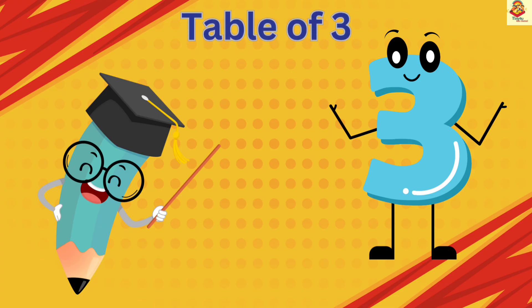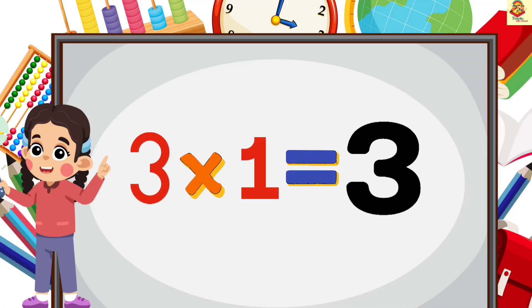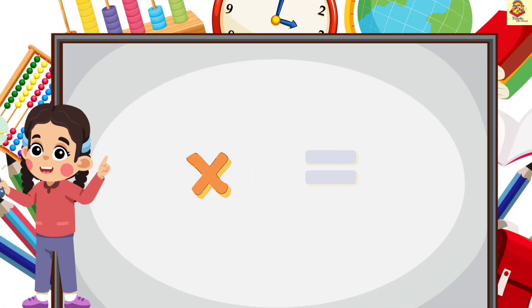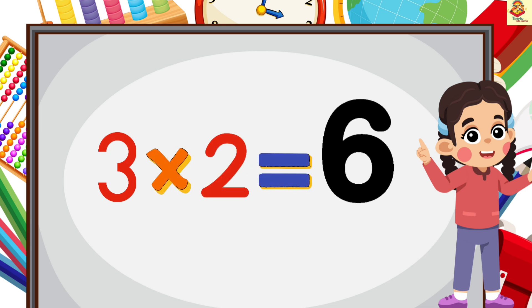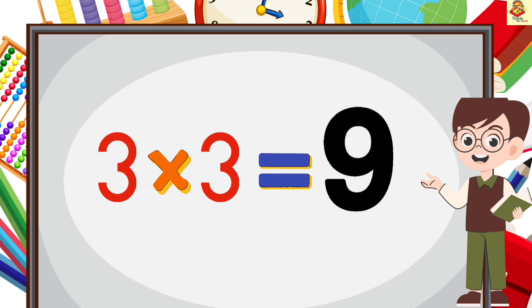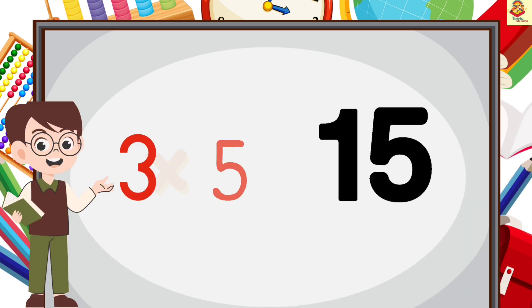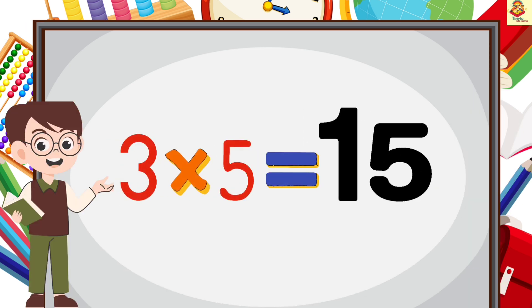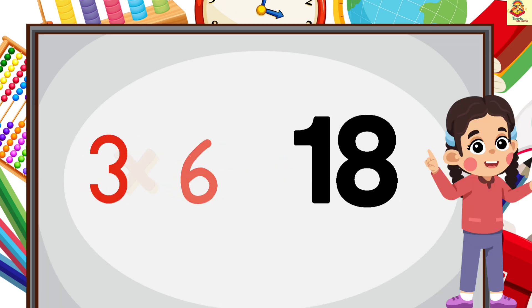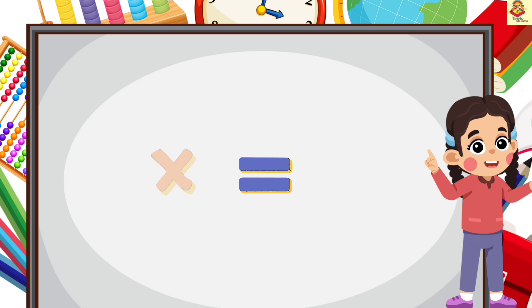Now table of 3. 3 1's are 3, 3 2's are 6, 3 3's are 9, 3 4's are 12, 3 5's are 15, 3 6's are 18.